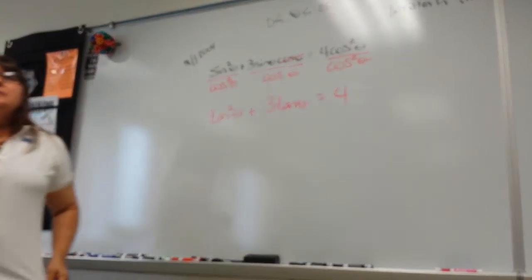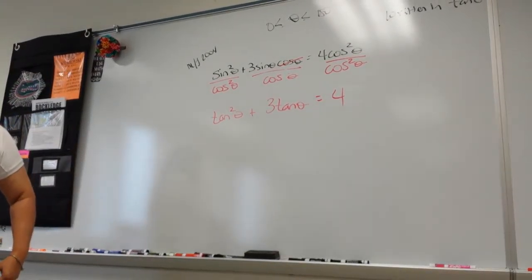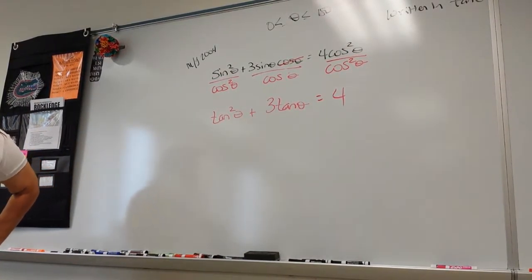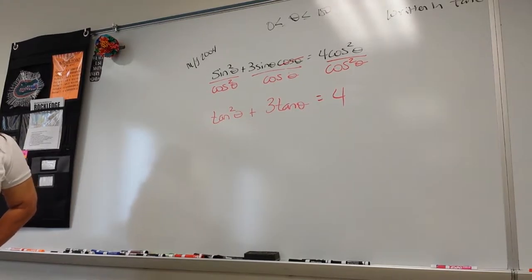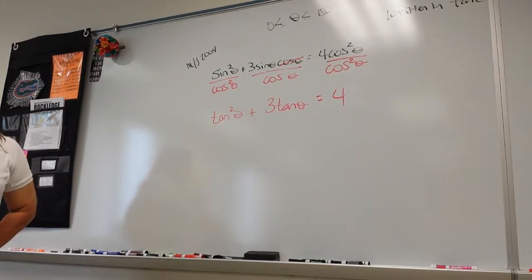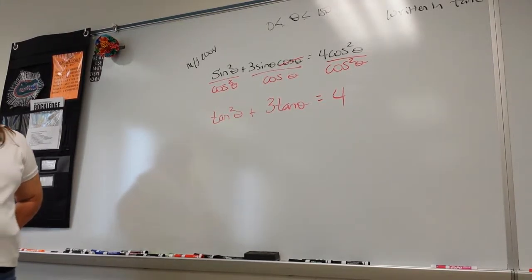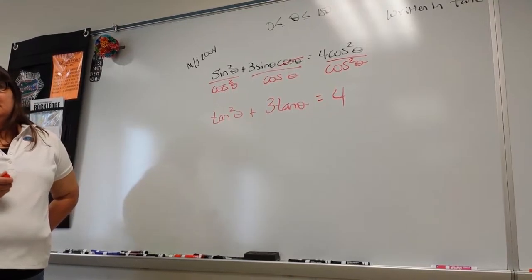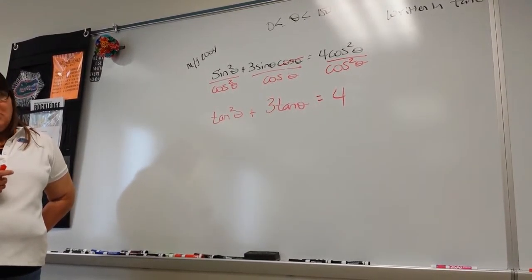Student: What if you had sine squared theta over cosine theta? Teacher: That can't really happen. You'd be left with a sine or a cosine on top, which is not tangent. In that case you'd look at your identity to try to convert to something else.